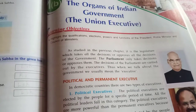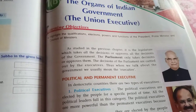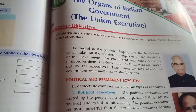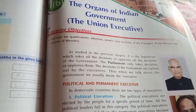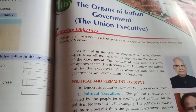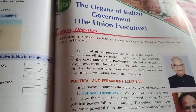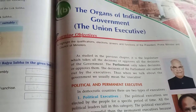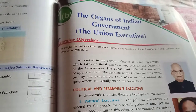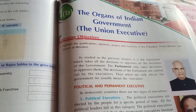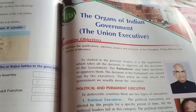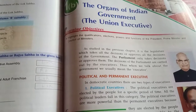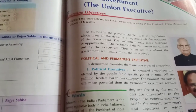In the first chapter we discussed about the legislature, and in this chapter we will discuss about the executive. We have already discussed that parliament only takes decisions or approves them. But after taking the decisions, somebody is needed to carry out those decisions — and those decisions are carried out by the executives. In a democratic country like India, we have two types of executives: one is political executives, another one is permanent executives.